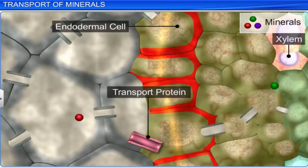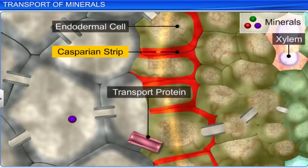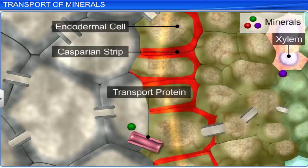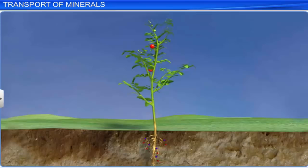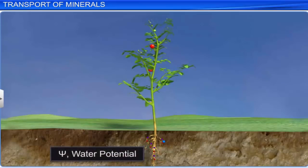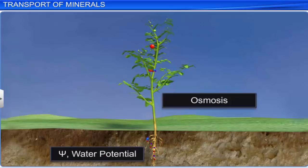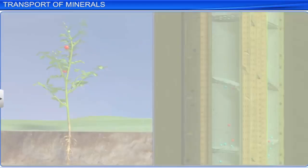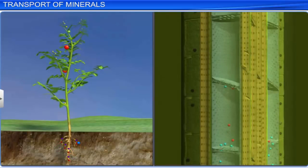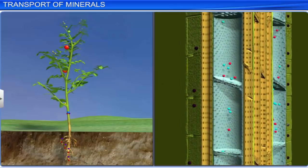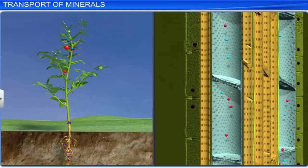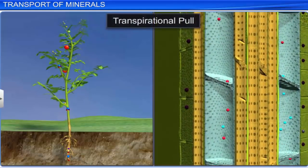Also, due to the presence of the suberin layer of the Casparian strip, the root epidermis can transport ions passively in one direction only. The active uptake of ions causes a water potential gradient in roots, which results in the uptake of water by osmosis. After ions reach the xylem, either passively or by active absorption, they are transported up the stem to the various sinks inside the plant body by transpirational pull.